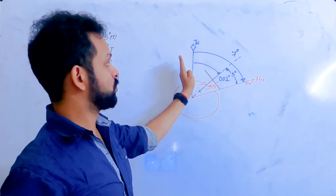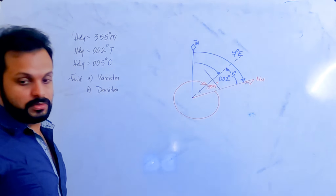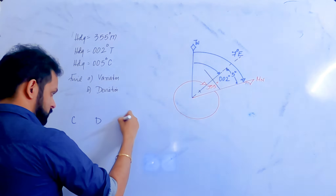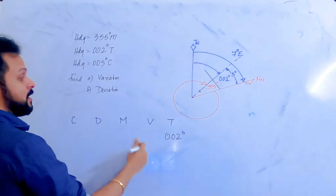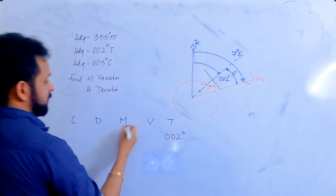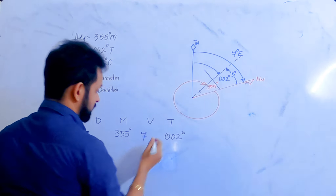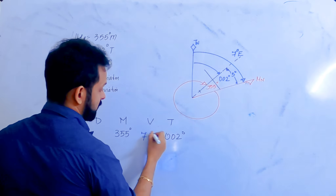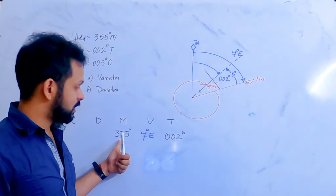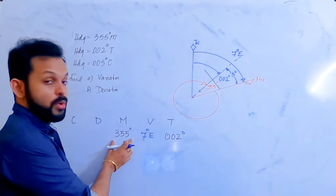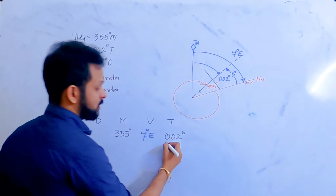Magnetic north is to the east of true north, so the variation is 7° East. Drawing the CDM: true heading is 2°, magnetic heading is 355°. The variation of 7° East is the angular difference between 355° and 2°. Looking at these values alone, you might think 355 is larger than 2° and therefore compass is 'best', but we must consider the full 360° concept — 2° can be written as 362°.